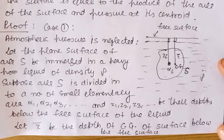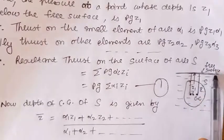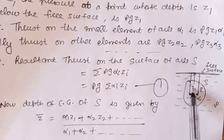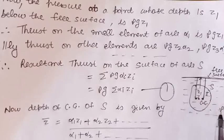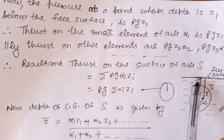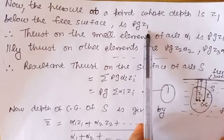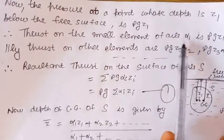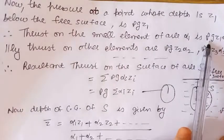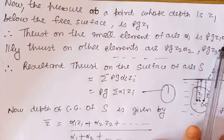We are considering the case when the atmospheric pressure is neglected. Let us take the pressure at a point whose depth is Z1 below the free surface. This is the free surface of the liquid and this depth is Z1. At this point, the pressure is given by the formula: density of the liquid into acceleration due to gravity into depth Z1, which gives rho into g into Z1. Therefore, the thrust on the small element having area alpha 1 is given by pressure into area, which is rho into g into Z1 into alpha 1.